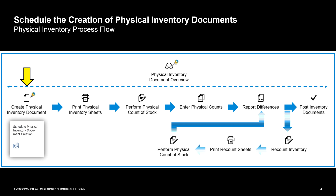As soon as the count results are entered in the system, the processor can see if there are any differences in value or quantity, and can then decide to either post the physical inventory document or to order or perform a recount of stock. At the end of the process it is necessary to post the physical inventory document. The yellow arrow in the figure shows the focus of this microlearning: the entire process step of physical inventory document creation.